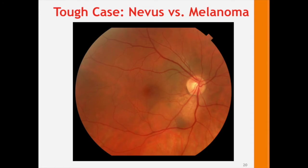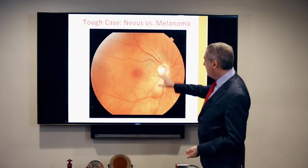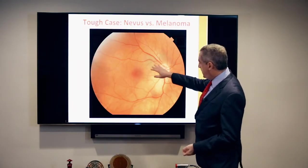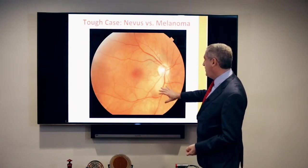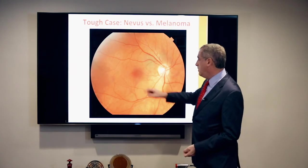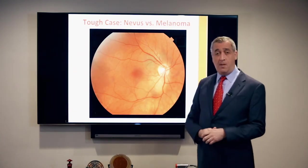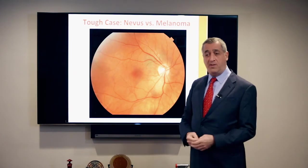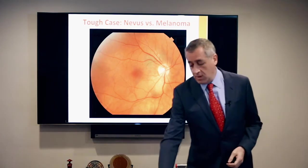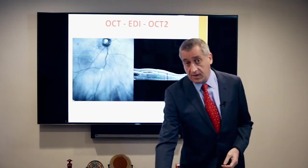Let's do a tough case — that last one was a very straightforward, garden-variety type case. Here we have a 50-year-old lady who came in with variable pigmentation around the disc and some fluid down below. This is the clinical picture, and most people would agree it's not very impressive or diagnostic in itself.